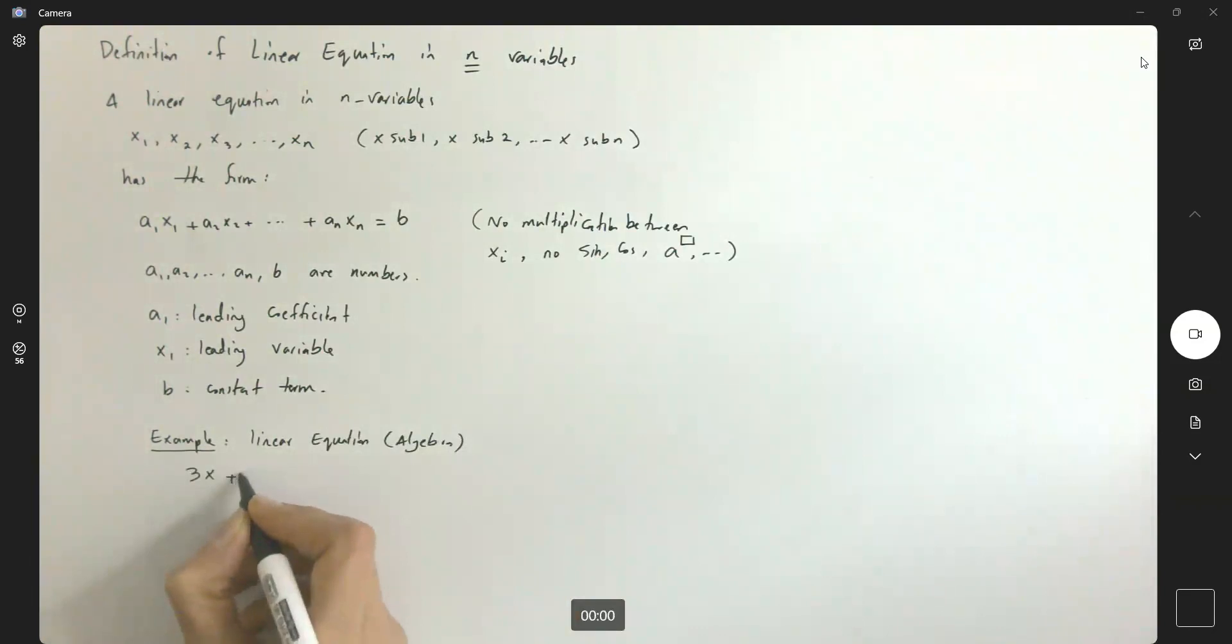3x plus 2y equals 5. Or you might have 1.5x plus square root of 2y minus pi equal to 0. You might see sine of pi over 2, which is a number, times x plus 4y equals 2 in pure number to power 2.